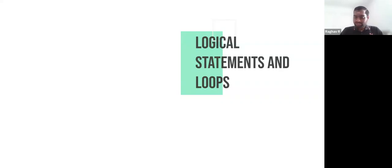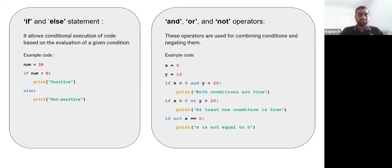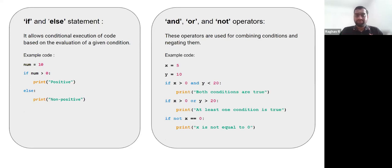Moving on to the logical statements and loops that the programming language offers. Logical statements are something like if-else statements — they allow the execution of code based on the given logic, and that is why we call them logical statements.